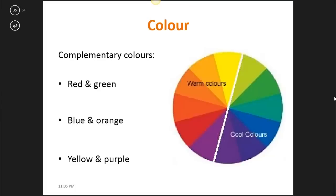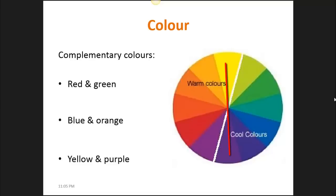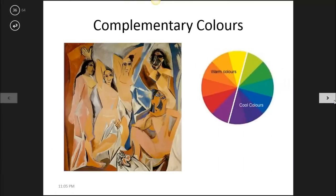The next element we're going to look at is color. Complementary colors are the colors opposite each other on the color wheel. So if you look at red, you'll notice the color directly opposite is green. Opposite blue we have orange, and opposite yellow we have purple. Going back to this painting by Picasso, you'll notice that he has used the complementary colors of orange and blue in his work.